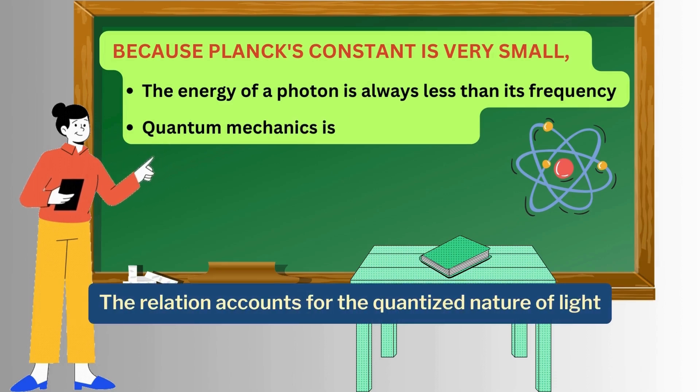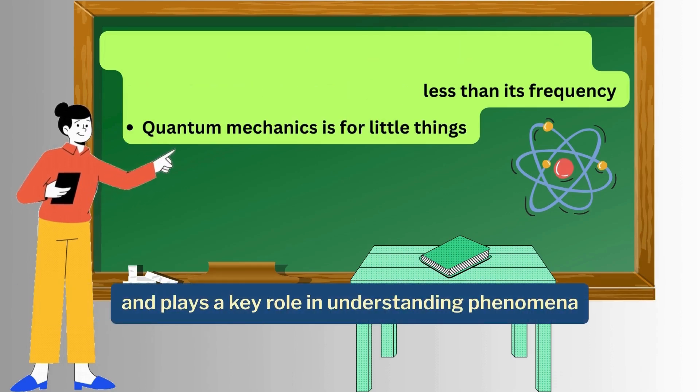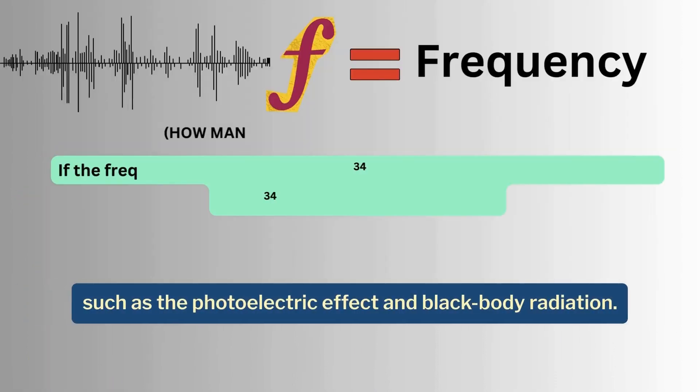The relation accounts for the quantized nature of light and plays a key role in understanding phenomena such as the photoelectric effect and black body radiation.